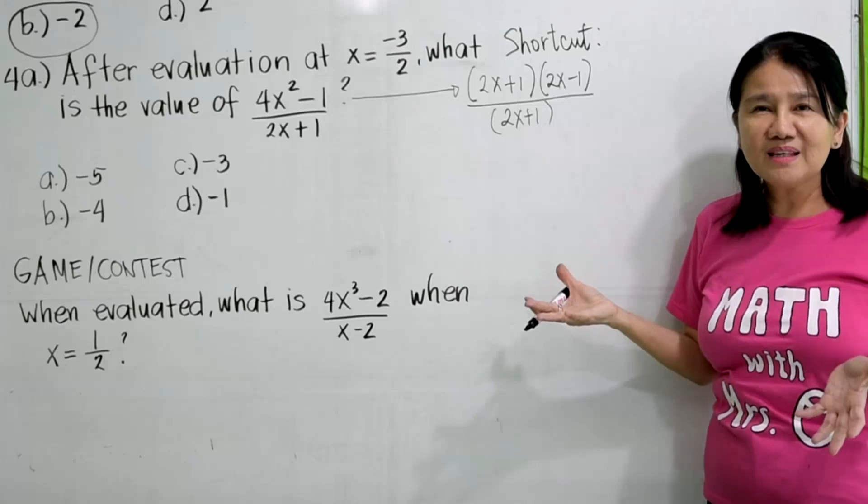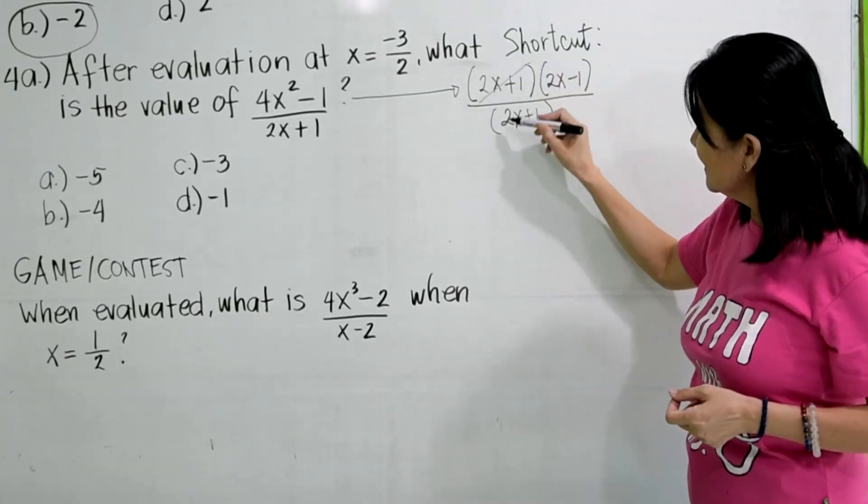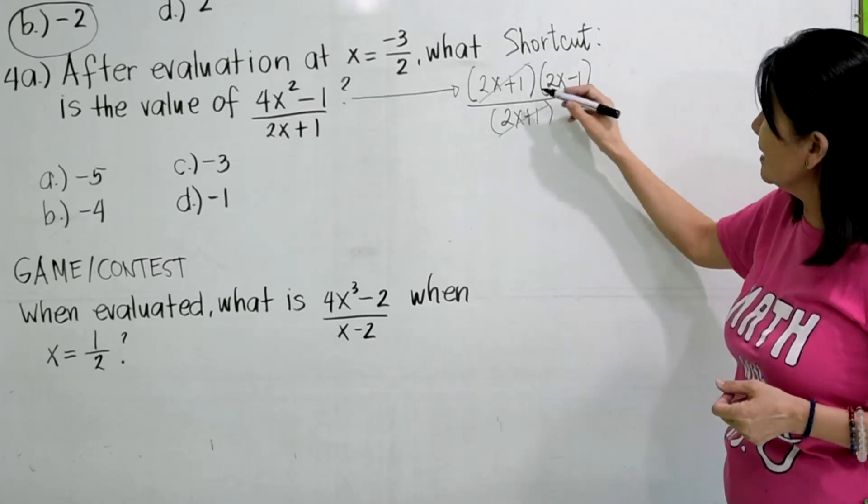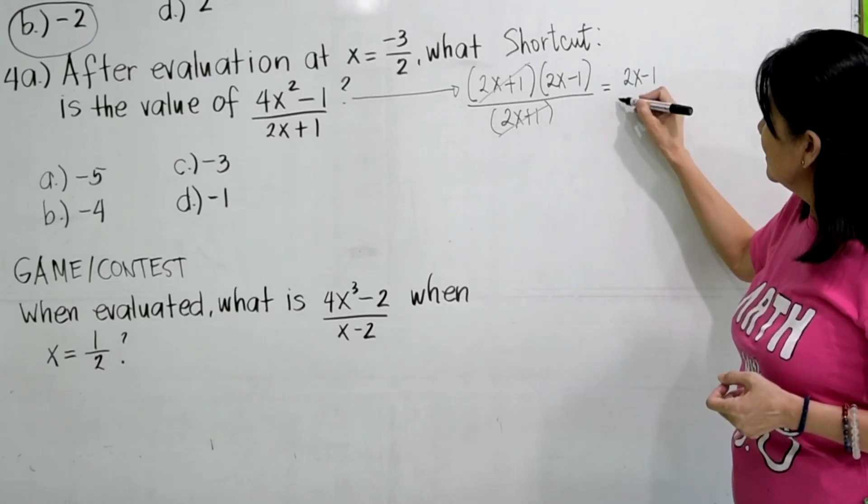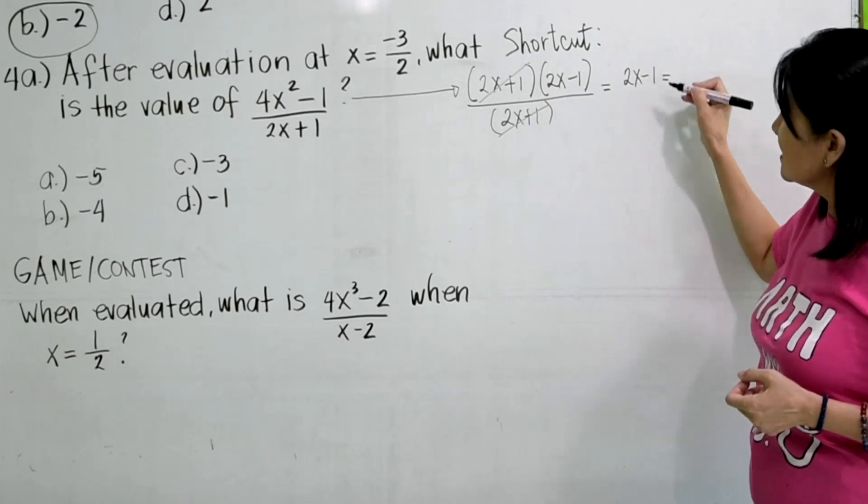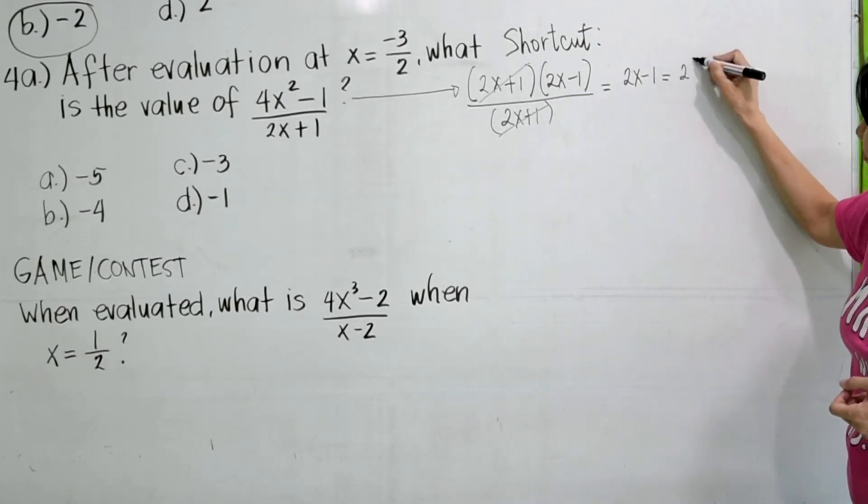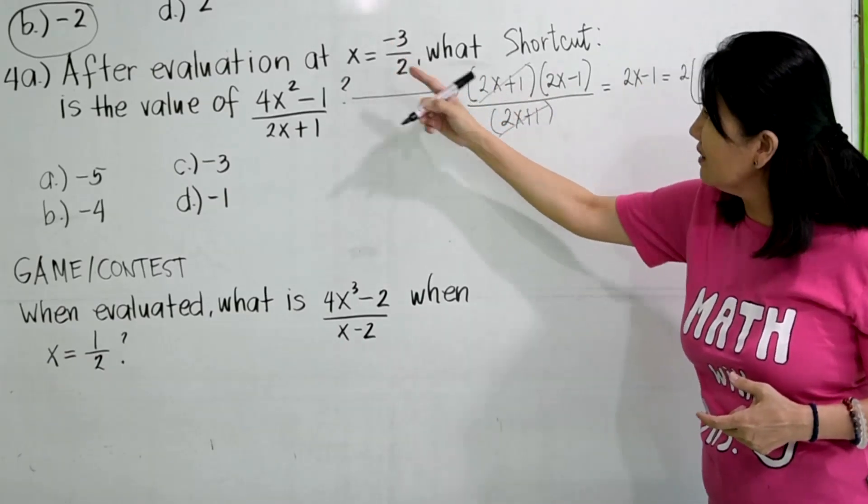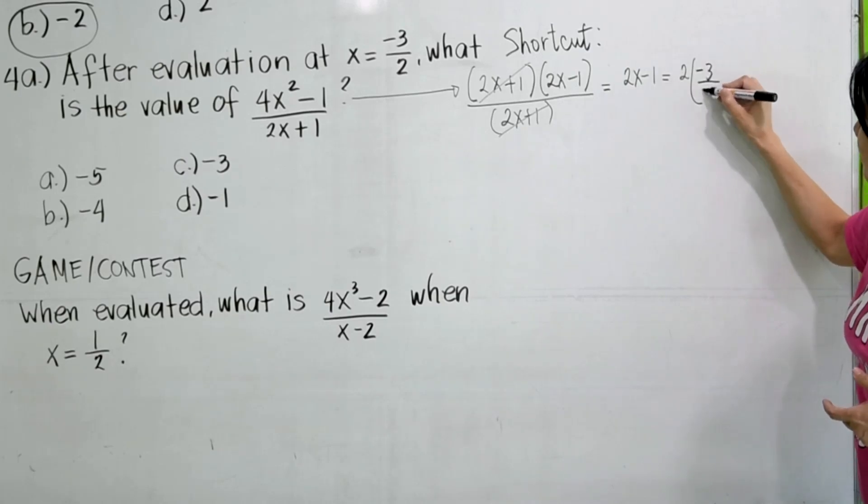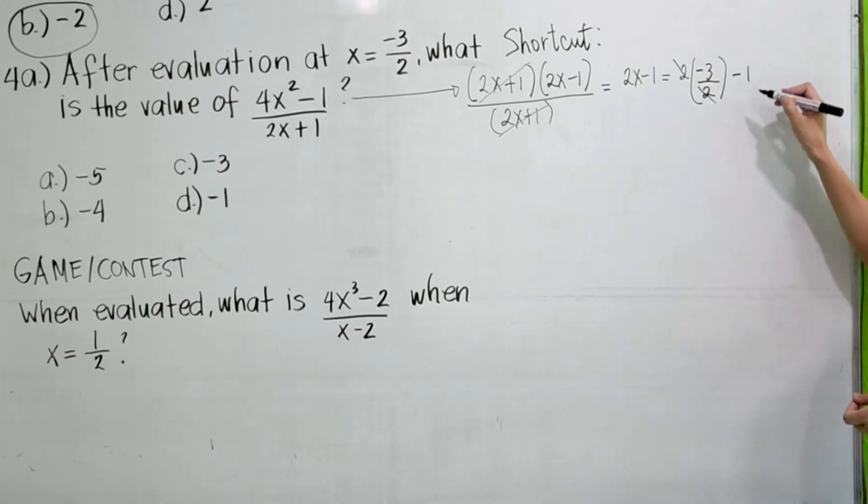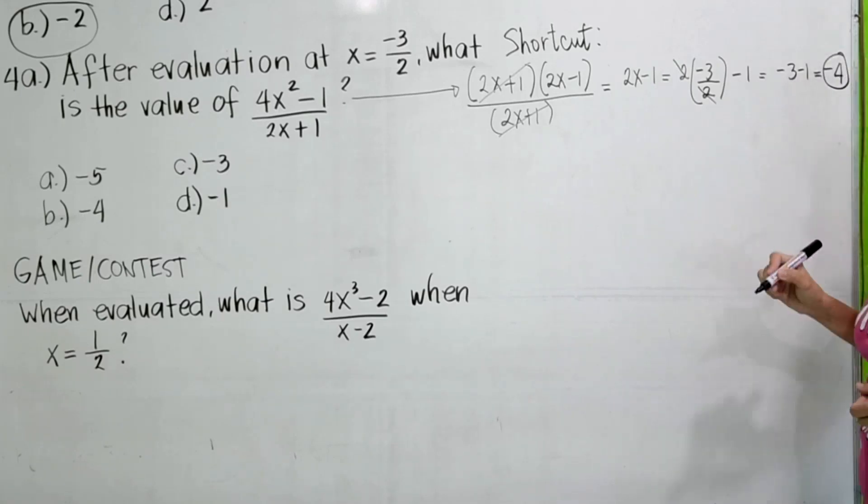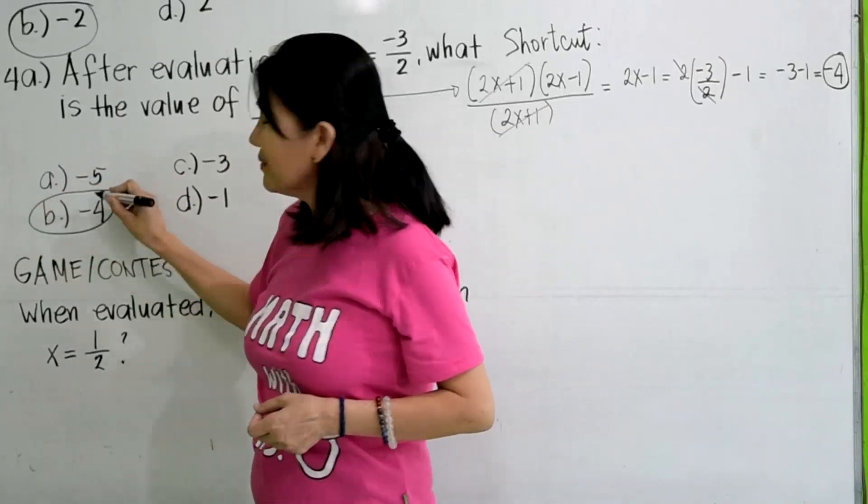Do you see now that something can be cancelled? We can cancel 2x plus 1 over 2x plus 1. That will give us 1. So we are left with 2x minus 1. And then, since this is already simplified as 2x minus 1, you can now substitute the values of x which is negative 3 halves. So 2 times negative 3 over 2 minus 1. As you can see, 2 over 2 can be cancelled. So you are left with negative 3 minus 1 or negative 4. So the answer is negative 4.